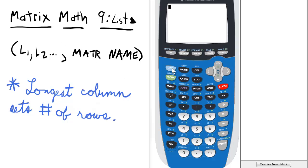So for this we need to go to the matrix menu and then go to the math menu from there and select 9, which is list.